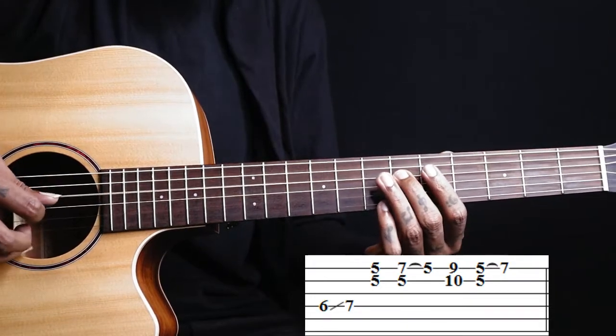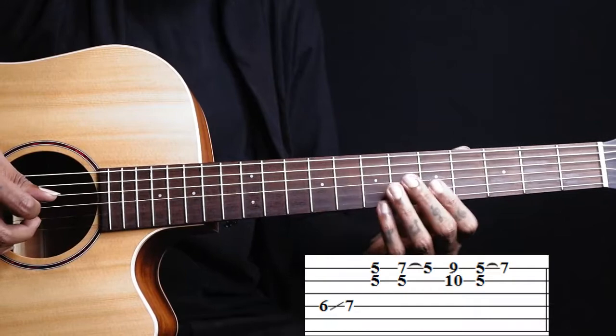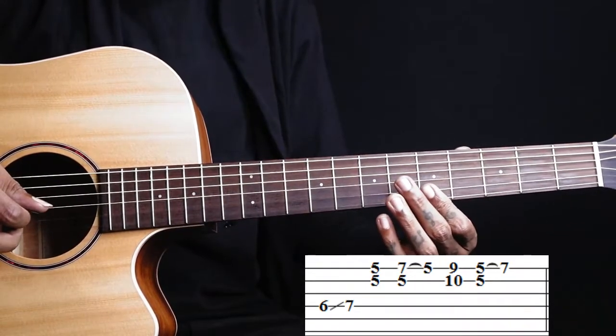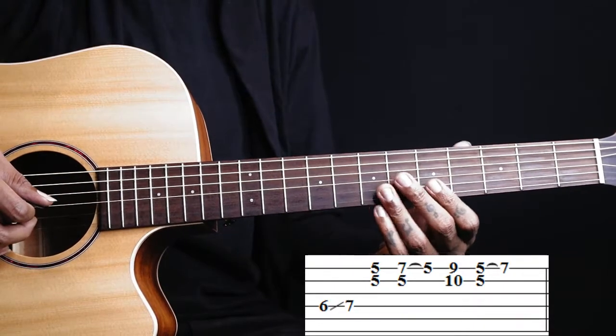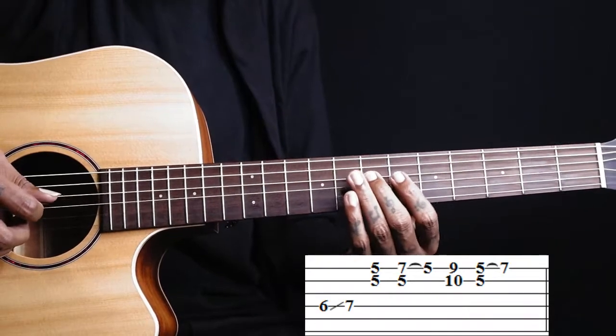We slide to seventh fret, and we have two notes together to play, kind of a double stop on first string and second string on the fifth fret. So we slide on fourth string six to seven.